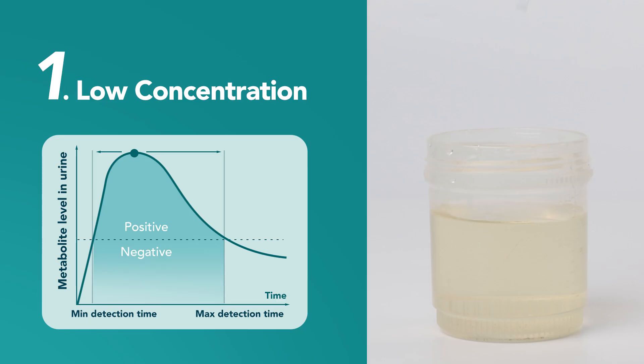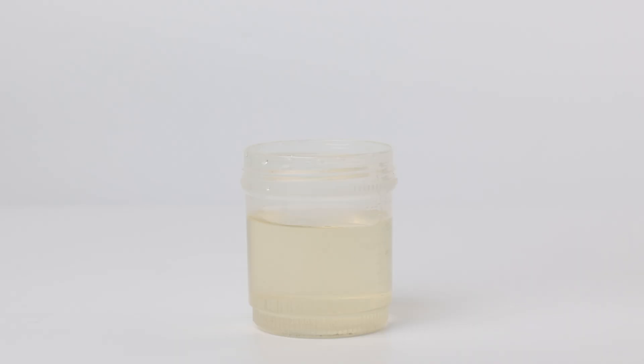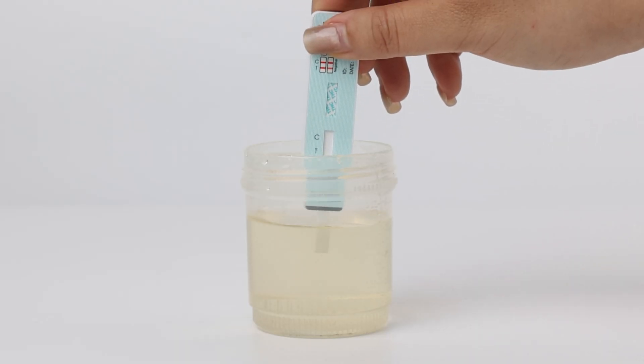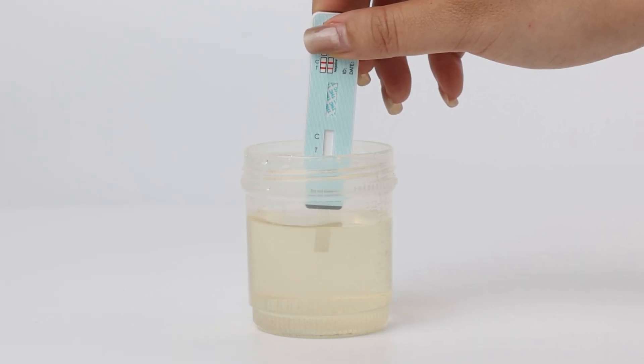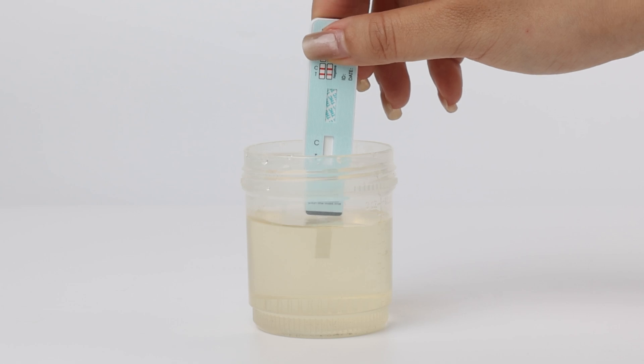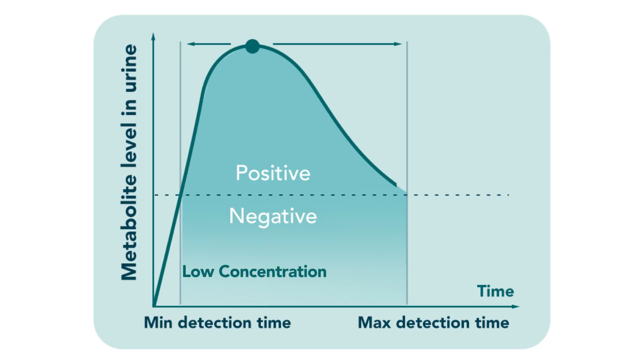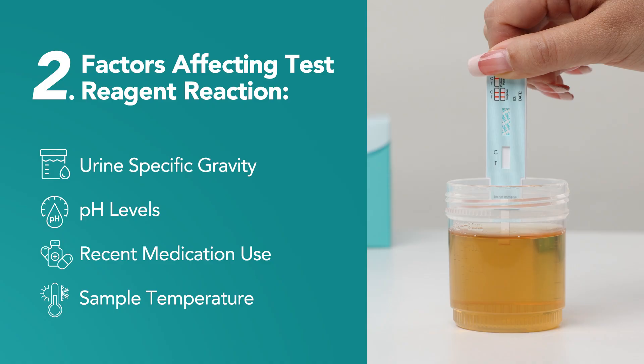There are a few reasons why you might see a faint test line on your THC drug test strip. First: low concentration. Your urine sample might contain detectable levels of THC or cross-reactive substances, but the concentration is below the detection limit. This results in a faint line.